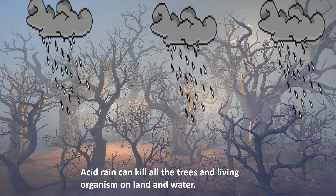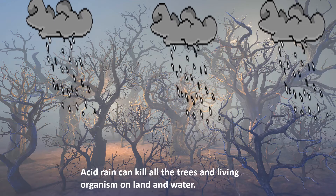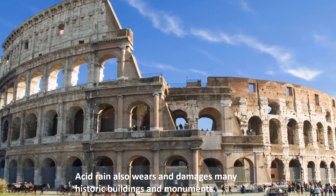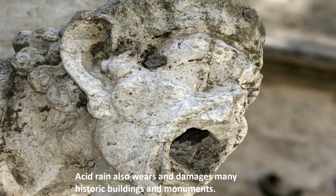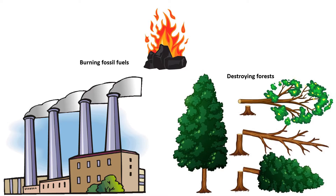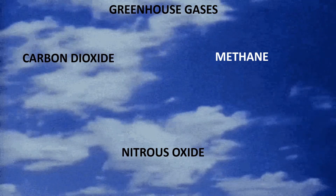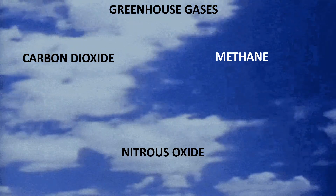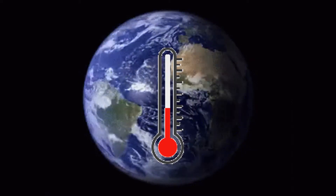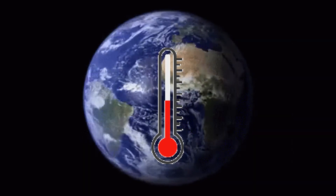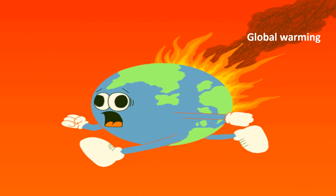Acid rain can kill all the trees and living organisms on land and water. It also wears and damages many historic buildings and monuments. Human activities such as burning fossil fuels and destroying forests have increased the amount of greenhouse gases such as carbon dioxide, methane, and nitrous oxide in the atmosphere. Greenhouse gases are another source of air pollution.